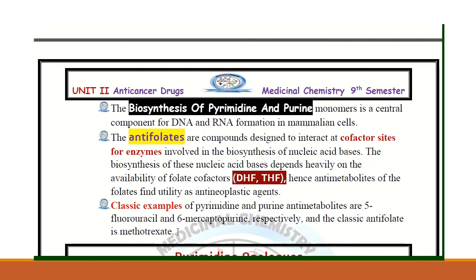The classic examples of purine and pyrimidine anti-metabolites are 5-fluorouracil and 6-mercaptopurine, and the classic anti-folate is methotrexate. This was the general classification and overview of anti-metabolite drugs. In the next lecture, I will discuss the individual drugs of the anti-metabolite class. For a quiz, you may check the description section.